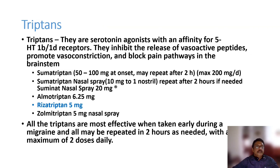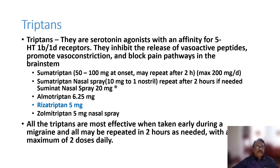Triptans — including sumatriptan, almotriptan, and rizatriptan — are effective acute migraine treatments. Sumatriptan is given at 50–100 mg at onset, repeated after two hours if needed. Dispersible tablets are available. Triptans inhibit release of vasoactive peptides, promote vasoconstriction, and block pain pathways in the brainstem. Rizatriptan dispersible tablets are widely available.